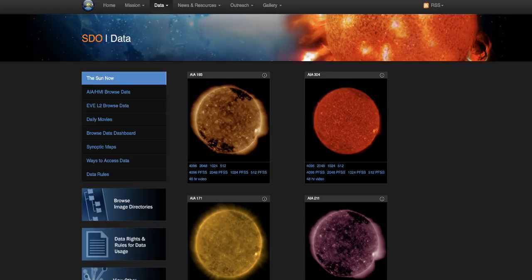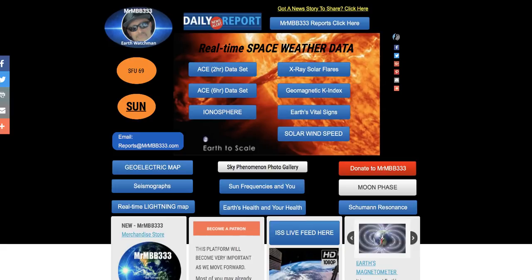If you haven't checked out the website, by all means do. mrmbb333.com. It's a good little hub for information. All of these tabs right here are real-time space weather data updated 24 hours a day, seven days a week. Find a geoelectric map, seismographs, real-time lightning, Schumann resonance, moon phase, sky phenomenon photo gallery, and the daily report. News articles that are updated daily, sometimes multiple times a day. Thanks for watching, guys. Have a super day and be safe out there.